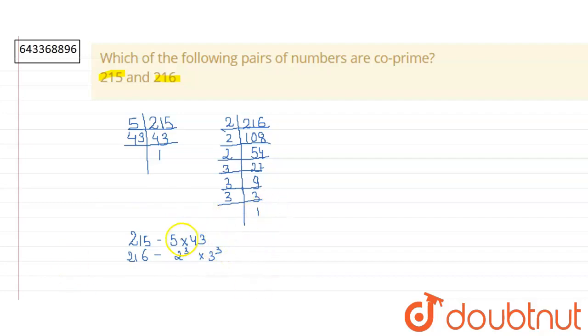Since there is no common factor other than 1 in these two numbers, yes, 215 and 216 are co-prime numbers. They are co-prime. They have only one as their common factor. That is the question. Thank you.